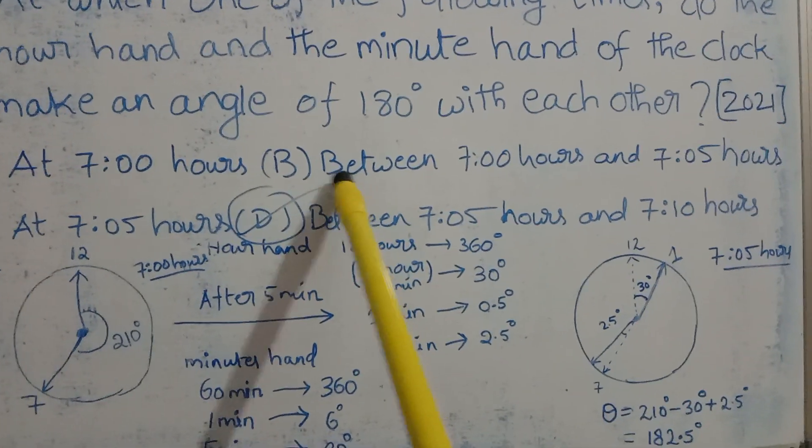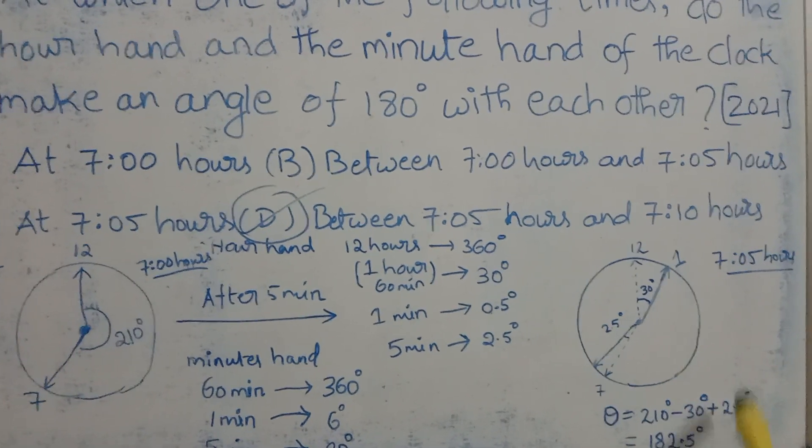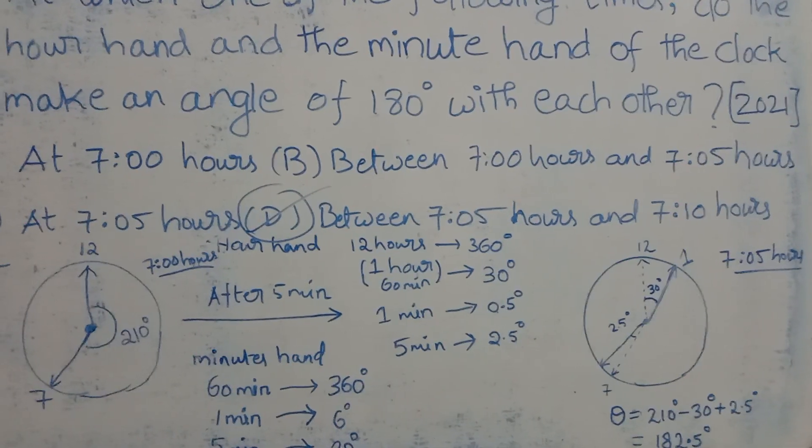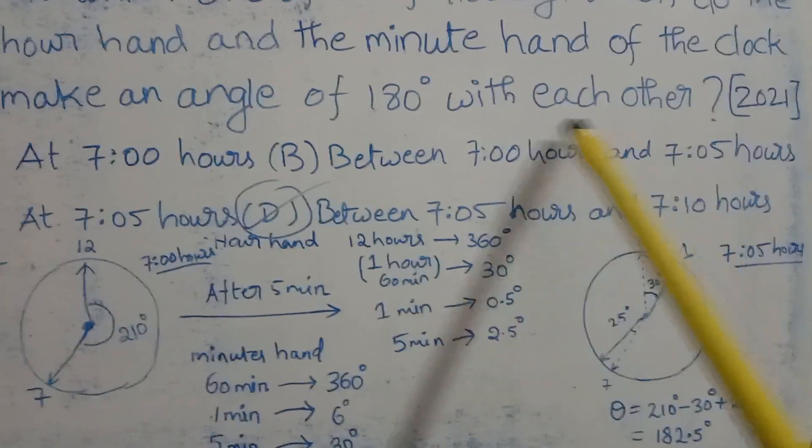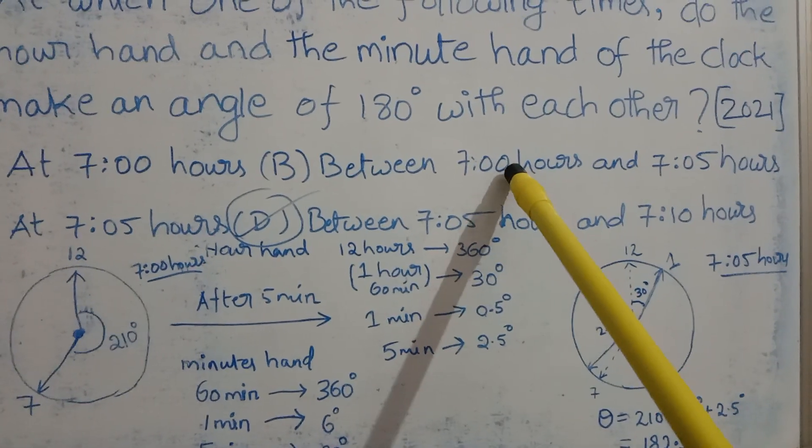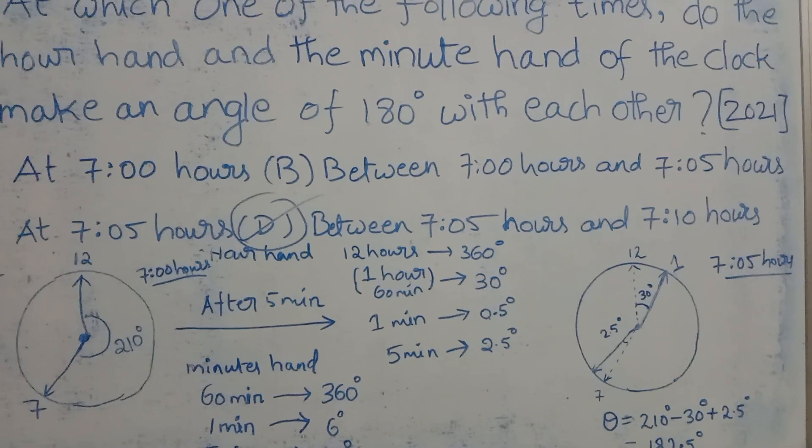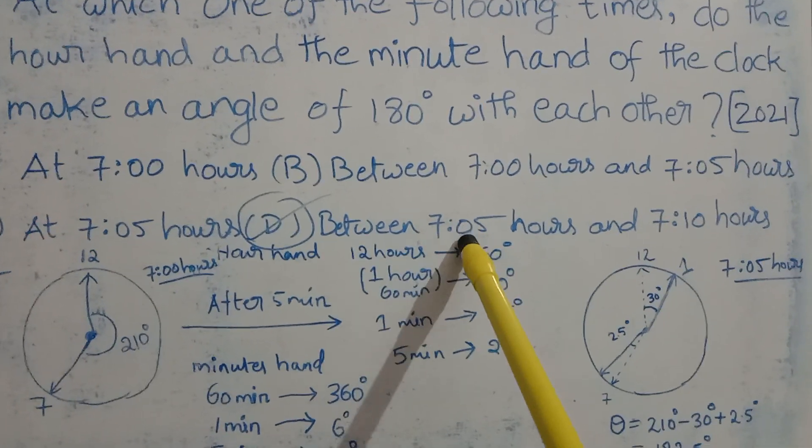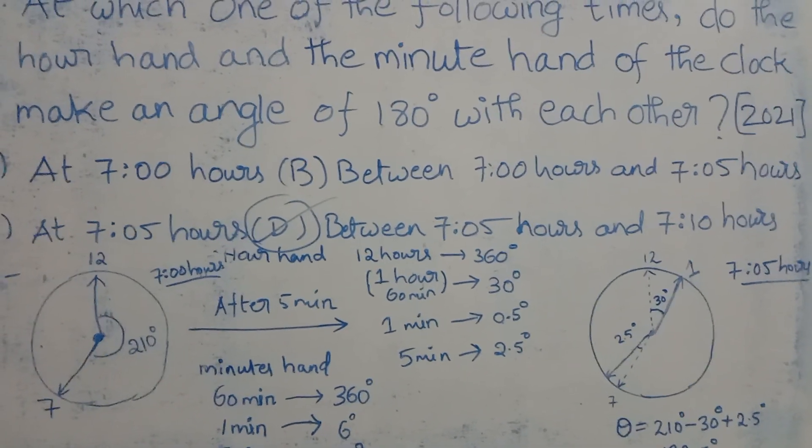At 7:05 hours the angle is 182.5 degrees. It decreases from 210 to 182.5 degrees between 7:00 and 7:05 hours. Definitely between 7:00 and 7:05 hours the angle will not be 180 degrees. But between 7:05 hours and 7:10 hours the angle will further decrease.